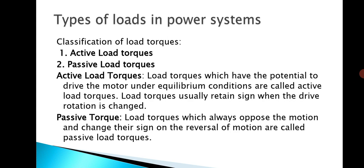In an electric drive, whatever drive you employ, the ultimate purpose is to drive the load, so that load should be driven by the motor. There are two types of loads: active load torque and passive load torque. Active load torques have the potential to drive the motor even under equilibrium condition. Active load torques usually retain their sign when the drive rotation is changed.